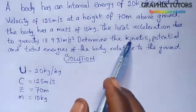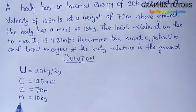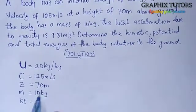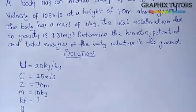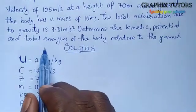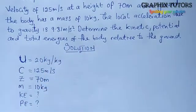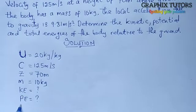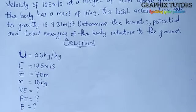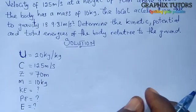We are told to determine the kinetic energy, which is a form of energy. We should also find the potential energy, which is also a form of energy. And we should look for the total energies of the body. The total energy of the body is our stored energy, and we use E to symbolize it.